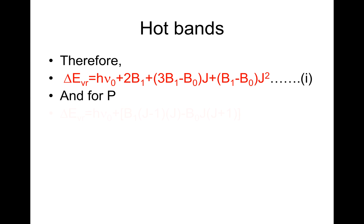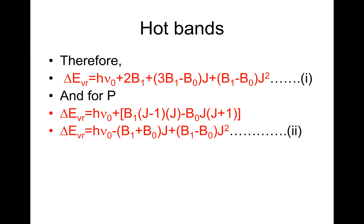And for P, delta EVR will be equal to H nu naught plus B1 into J minus 1 into J, minus B0 J into J plus 1. Delta EVR is equal to H nu naught minus B1 plus B0 into J plus B1 minus B0 J squared. That's equation double I.